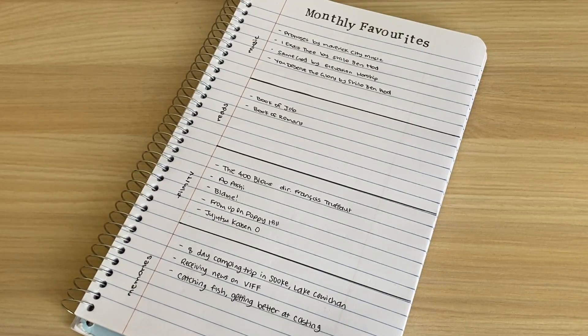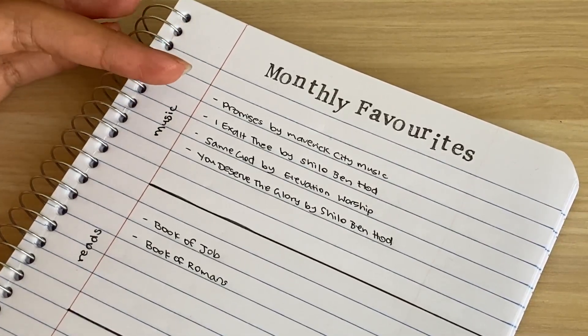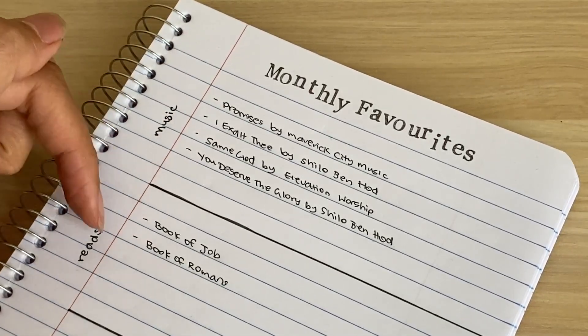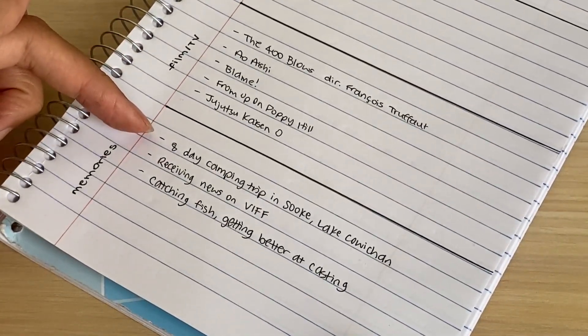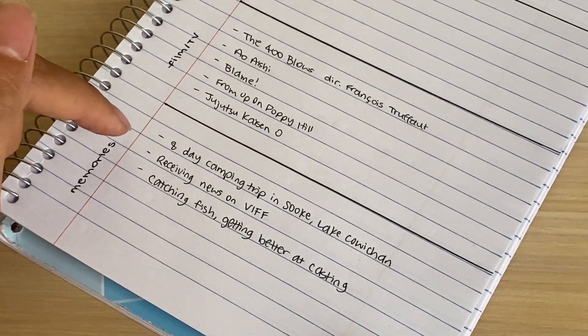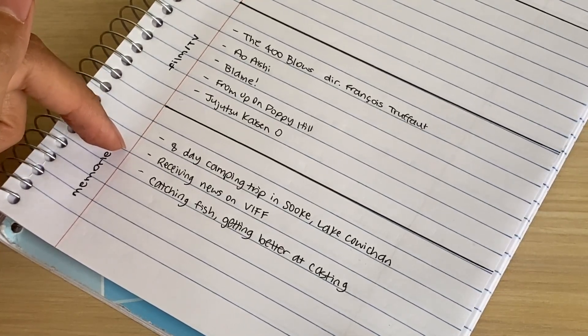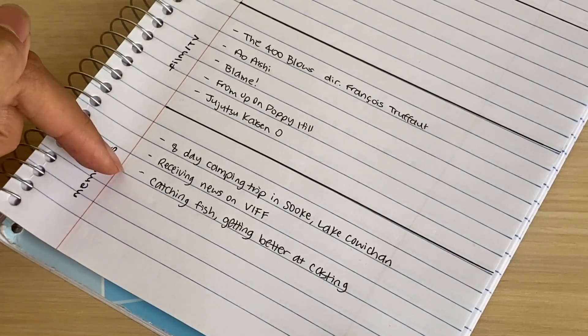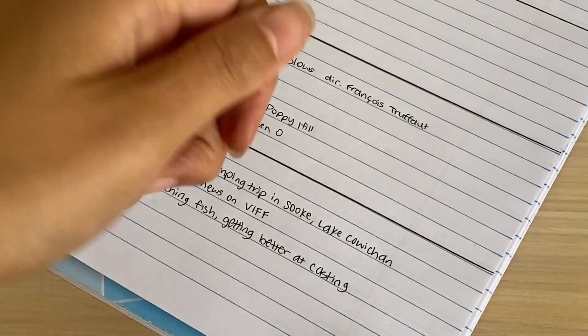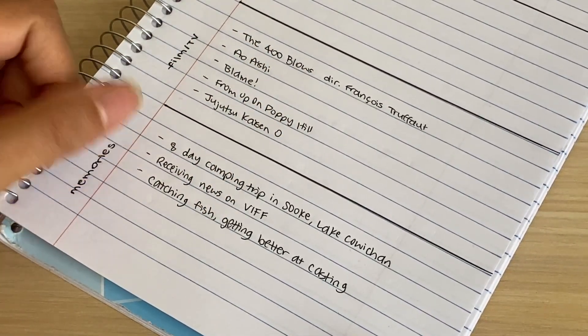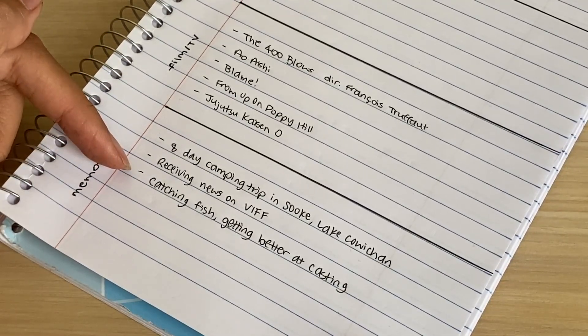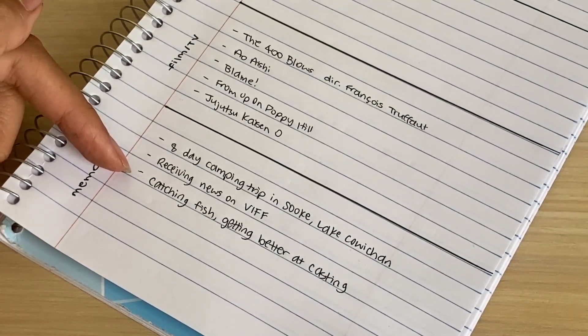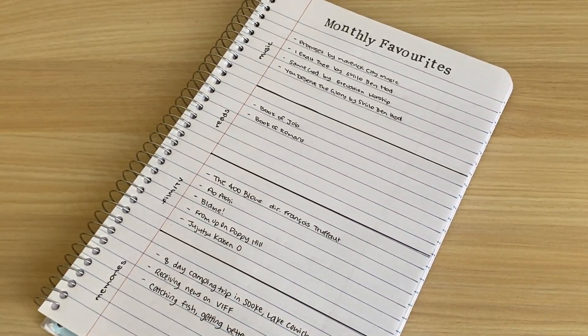This is the monthly favorites page all filled in. Let me briefly go through the examples I've put for each section. For music, I just wrote down a few worship songs that I've been enjoying. For reads, I just wrote down two books of the Bible that have really spoken to me lately in this season of life. For memories, I just wrote down my eight-day camping trip I did with my husband. I've got a movie premiere coming up at Vancouver International Film Festival, so hopefully I can vlog a bit of that next month. We've been doing a lot of fishing together, my husband and I, and I've been getting better at casting my rod out. I am a city girl—I didn't grow up fishing or doing any kind of outdoor activity really—so it's all brand new to me and it's great to learn these skills. That is my monthly favorites spread.